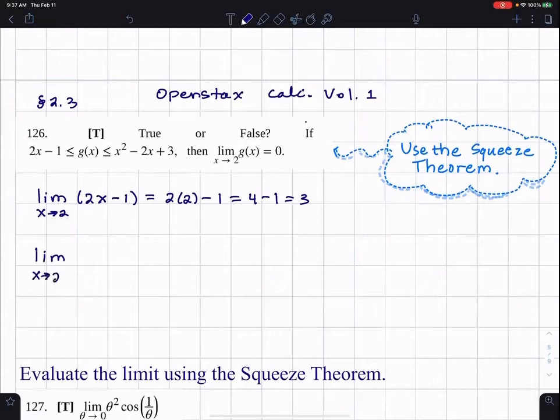I can easily do that because those are polynomials. So I can just directly substitute X equals 2. X is approaching 2. I can just directly substitute in 2 because they're polynomials, and so here we go.